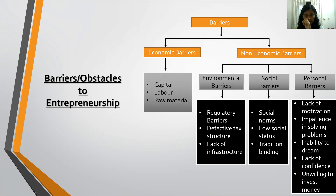The second economic barrier is labour. In our country, there are a lot of people available — there is no shortage of quantity of labour — but there is a lack of quality labour. We need specialized individuals in particular fields, but skilled labour is not always available. Cheap labour is available, but quality skilled labour is not, making this labour unproductive and unskilled, which acts as a barrier.